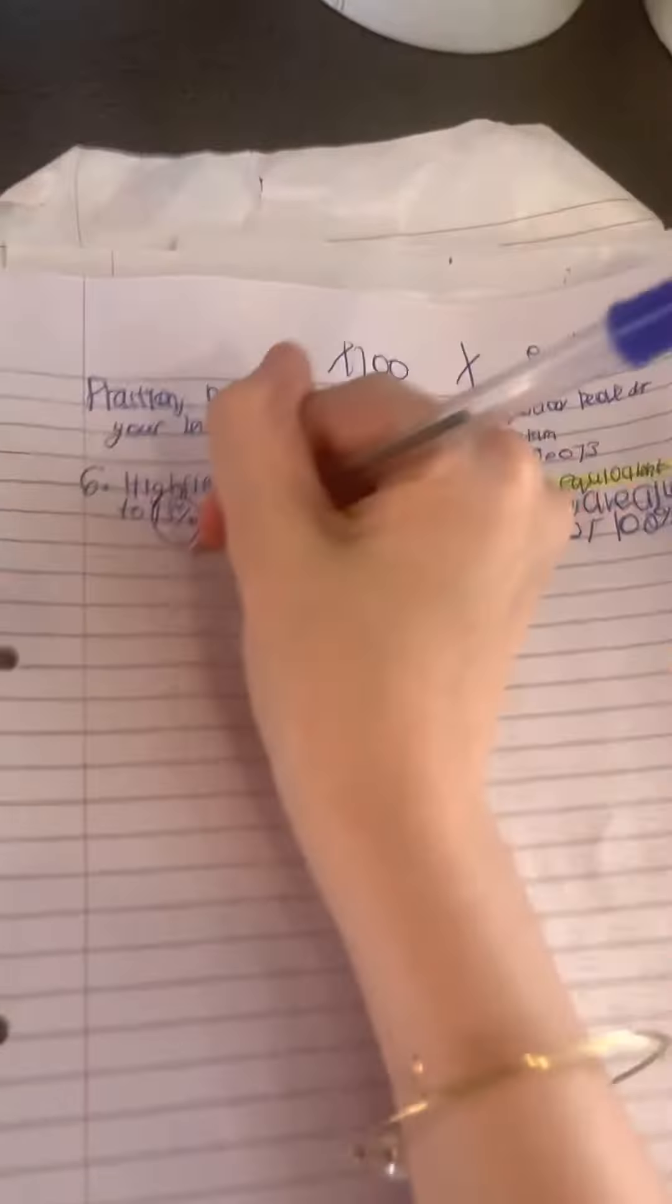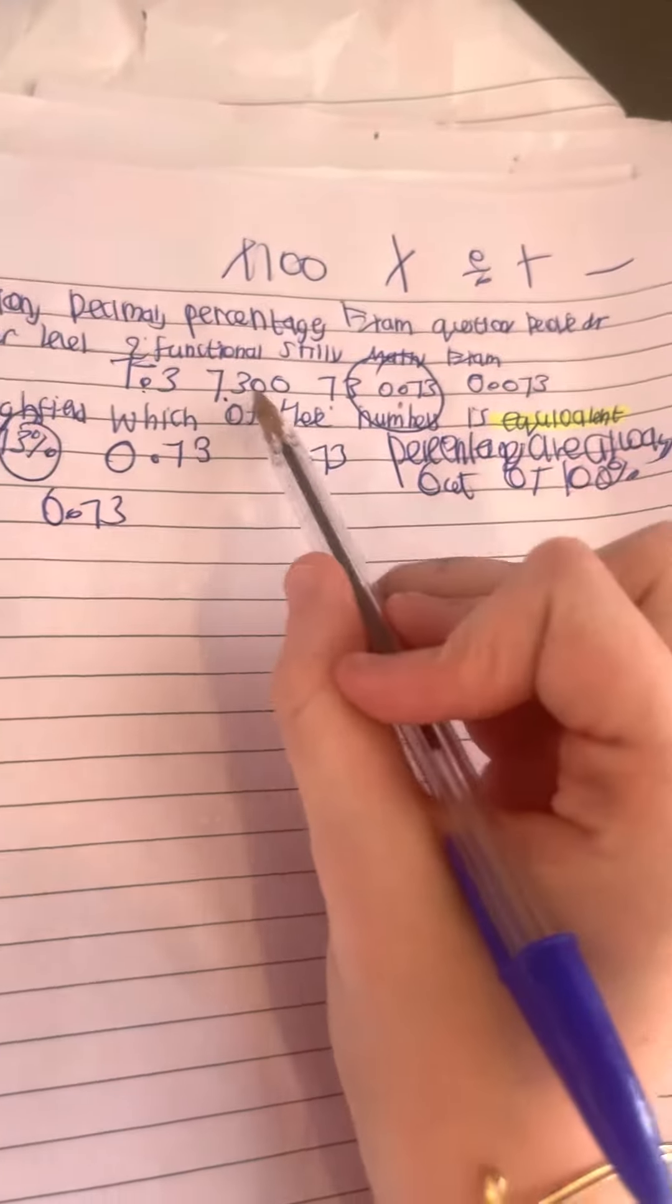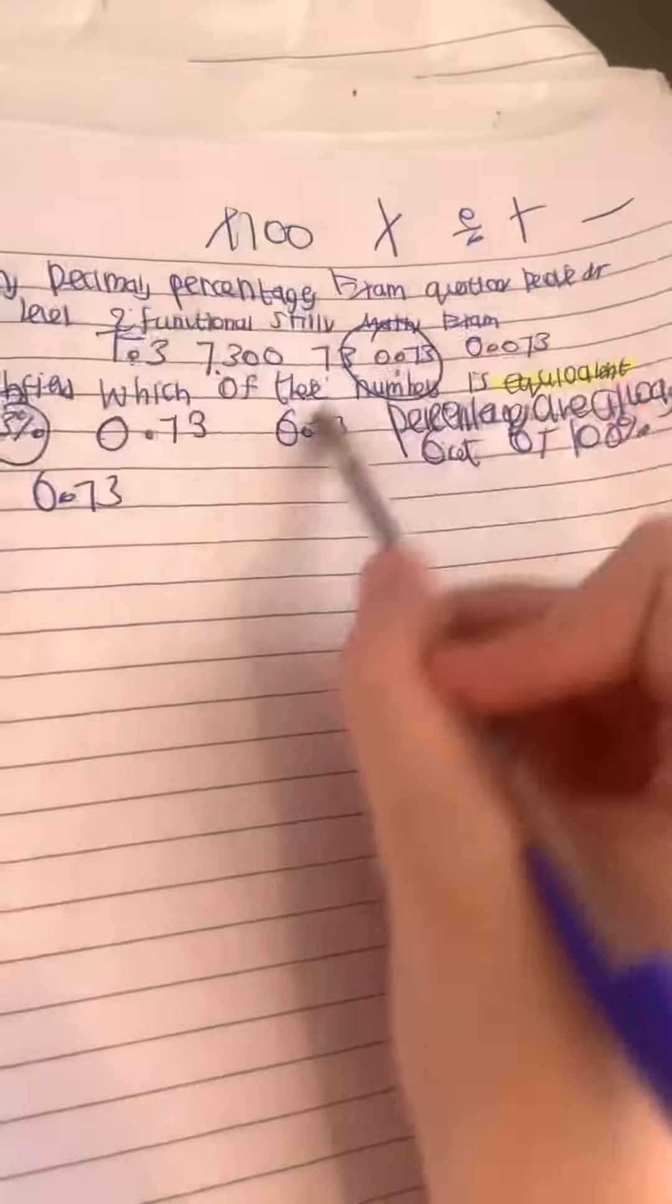So obviously it's going to be 0.73, 7.3 - you could try and times these by 100. So you could try 7.3 times 100.